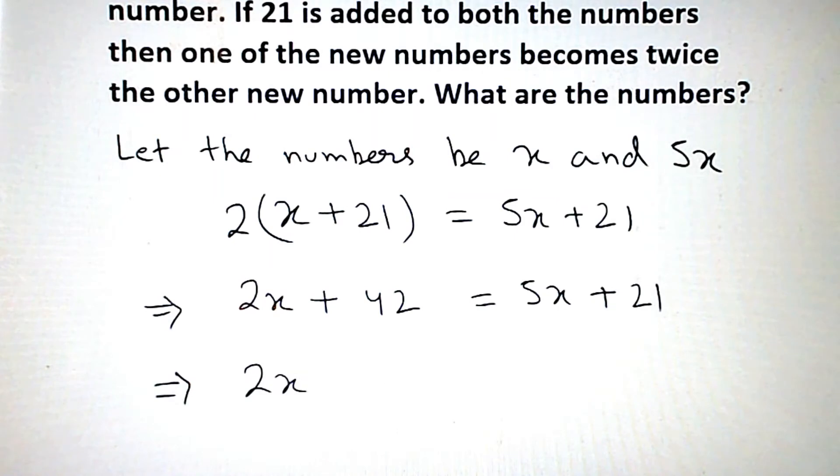Now we can do this. 2x is here, and 5x is here, so we'll move to the left side, it becomes minus 5x when transposed. And 42 is here, so it becomes minus 42 when transposed.